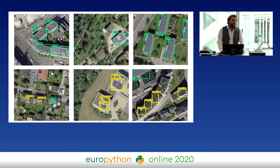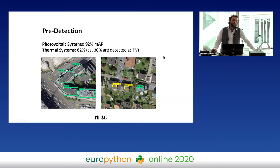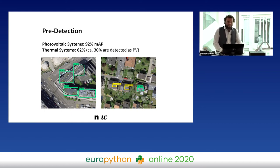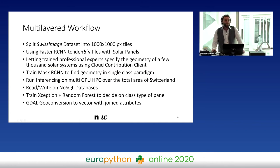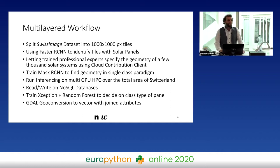This is not exactly yet what the Federal Office wanted, but it's already going in the right direction. The average precision for photovoltaic systems was actually really high — about 92%. For thermal, it was about 62%, because a lot of them were detected as photovoltaics — they tend to be a bit smaller, a bit harder to detect, and have higher heterogeneity. So we thought we'd go for a multi-layered workflow: split our datasets into tiles, use Faster RCNN to identify the tiles, and then start a workshop where professional experts label the concrete geometries.